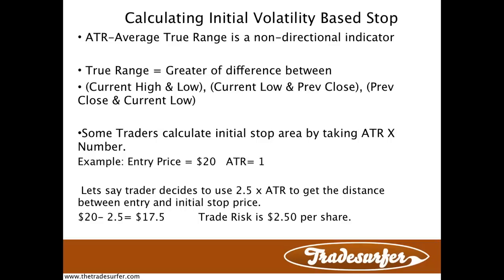What some traders do is calculate an initial stop loss by taking the ATR times a number. For example, let's say an entry price on a position is $20 and the ATR is currently 1. A trader might say: if the ATR is 1 and I want to put my stop about 2.5 times the ATR below the current price, I would take my stock price of $20 minus 2.5 times my current ATR of 1, which is 2.5, and that gets to $17.50. So a trader buying a stock at $20 would exit if it hit $17.50 or lower — their trade risk per share is $2.50.